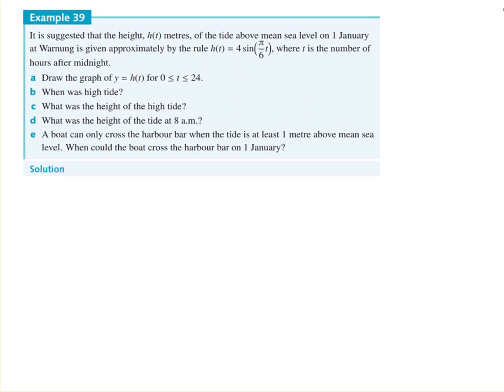Example 39. And you get a lot of these type of problems with tides. So it's suggested that the height of the tide above mean sea level on the 1st of January, and also note the dates, because they're like where you start from. At Warnung, it was given by this rule, h of t equals 4 sine π on 6 t, where t is the number of hours after midnight. Now, note, this is the average sea level, because it says it's the mean sea level. Sometimes they'll have a vertical translation in these questions, sometimes they won't. And this one looks like it doesn't.